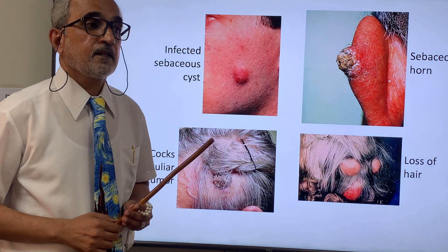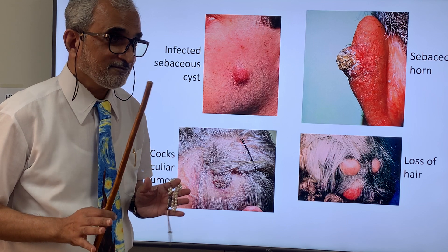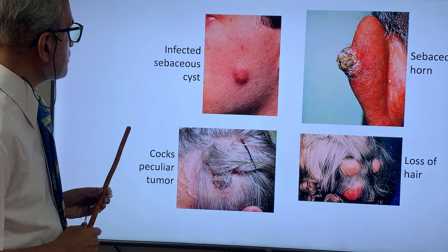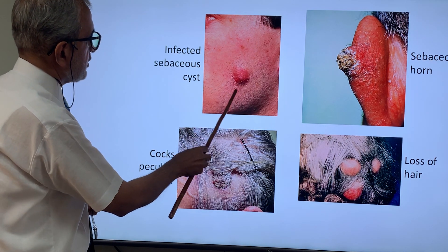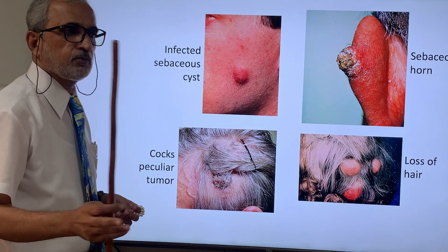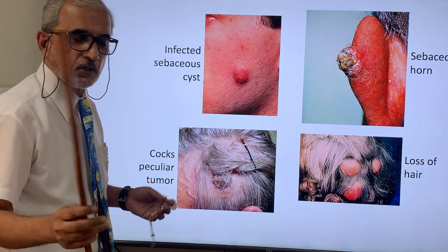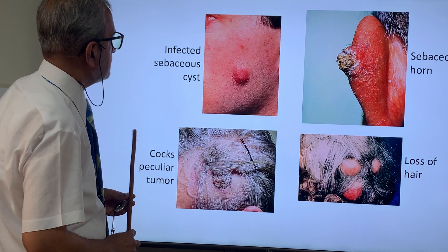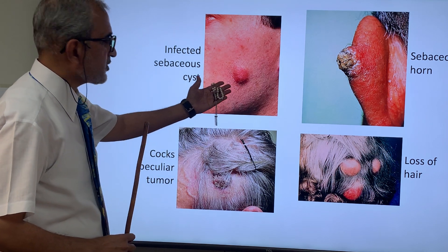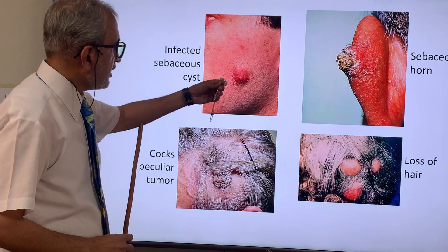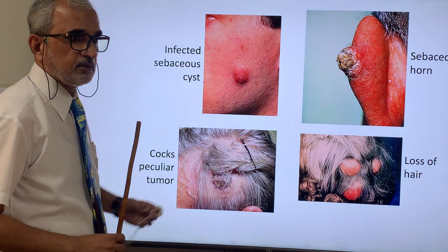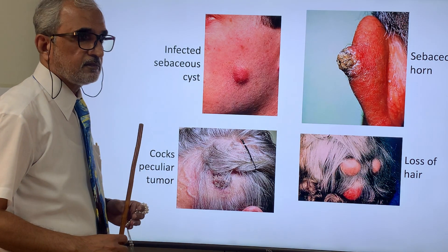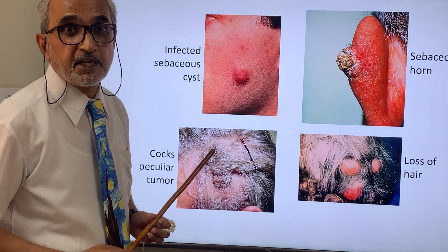The role play ends. Coming back to the images: this is a sebaceous cyst — these pictures are from online sources, not my own. This is the punctum. If you look at the color, it is red; if you touch it, it will be painful and tender; and it will be warm. These are the classical clinical signs of inflammation.